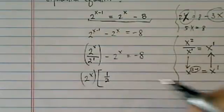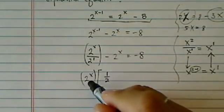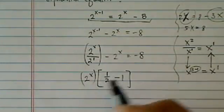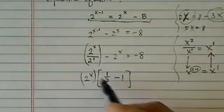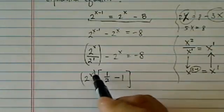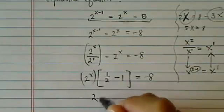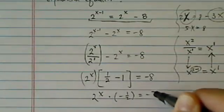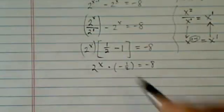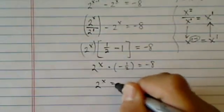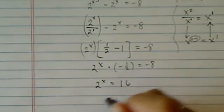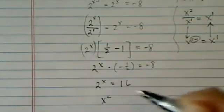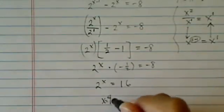So the first term is one-half of 2 to the x minus 1. If I multiply them together, I have 2 to the x divided by 2 minus 2 to the x. Then I have 2 to the x times minus one-half equal to minus 8. From there, it should be pretty easy to solve: 2 to the x equals 16, or x equals 4.